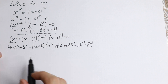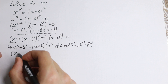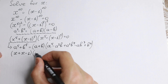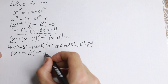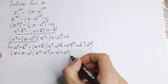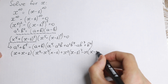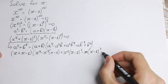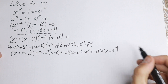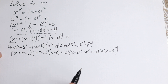Let's apply this formula to our first factor. We will have x plus x minus 1, times the long parentheses: x to the fourth minus x cubed times x minus 1, plus x squared times x minus 1 squared, minus x times x minus 1 cubed, plus x minus 1 to the fourth power.